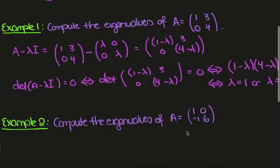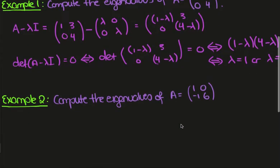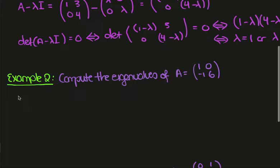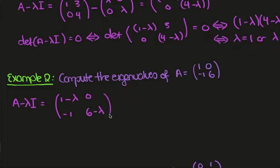Let's look at another example. Here we have the matrix [1, 0; -1, 6]. So A minus lambda I is going to be [1 minus lambda, 0; -1, 6 minus lambda].